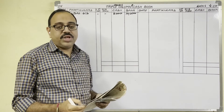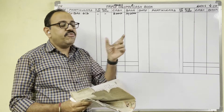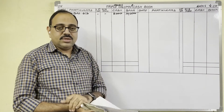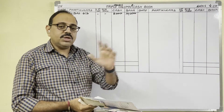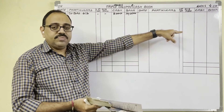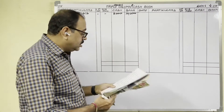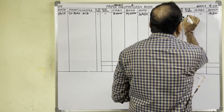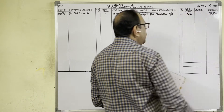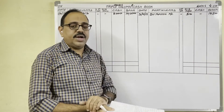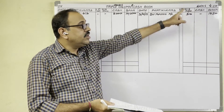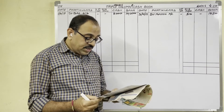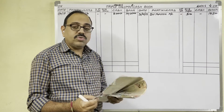3rd April: Issued a check to Rahul — 1,450 rupees; discount received 50 rupees. The firm has to pay 1,500 rupees to Rahul. Instead of giving cash, the firm issued a check, so Rahul goes to the bank and withdraws the money — our bank balance is decreasing, so on the credit side we write: 3rd April, By Rahul Account, check amount 1,450 in the bank column, and 50 rupees in the discount received column. We had to pay 1,500 in full; we gave a check for 1,450, so the difference of 50 rupees is discount received.